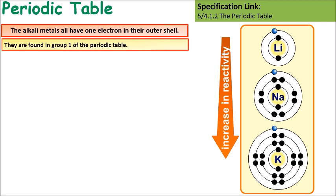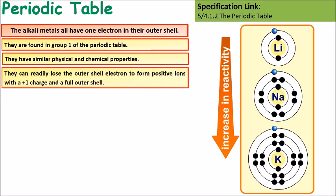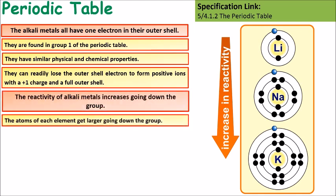Some more information about group 1 elements. They're all found in group 1 of the periodic table. They all have similar chemical properties. They all readily lose an electron from their outer shell to form an ion with a positive charge. The atoms of the group get larger as you go down the group. So lithium would be the smallest atom and you would get progressively larger, for instance potassium would be a lot larger.